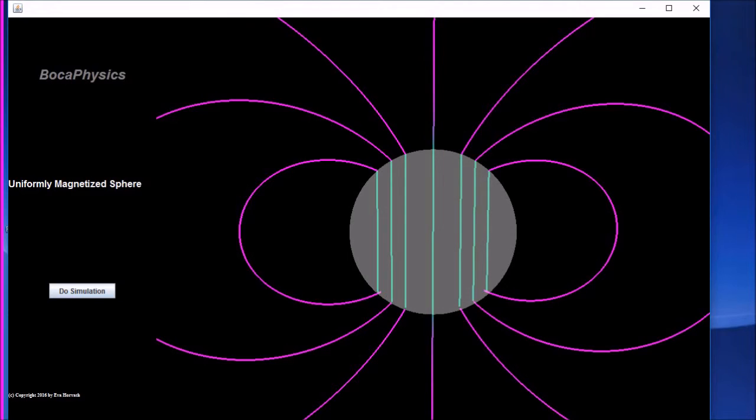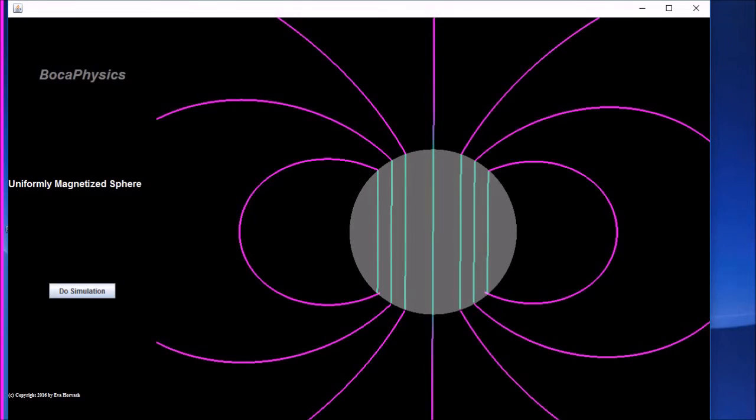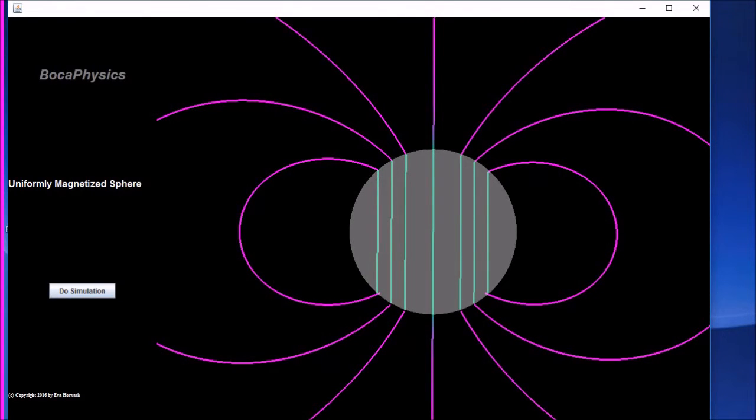We first solve for a magnetic scalar potential from which the h field is calculated. Once the h field is obtained, the magnetic field is equal to mu naught h plus m inside and mu naught h outside. We see that the magnetic field inside the sphere is uniform. Notice the straight lines and the uniform color. Outside, however, the magnetic field is identical to that of a pure dipole.